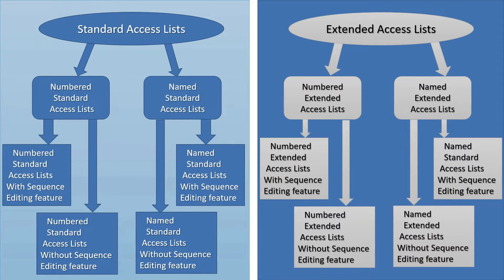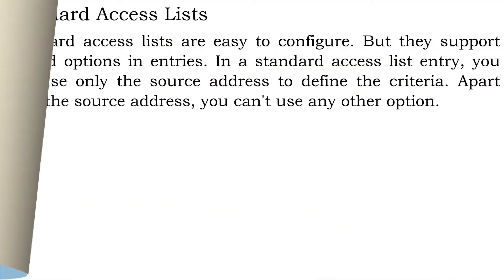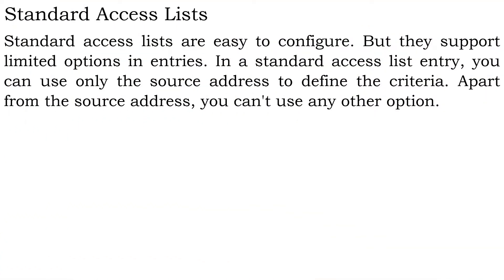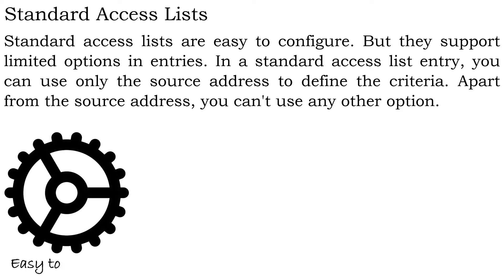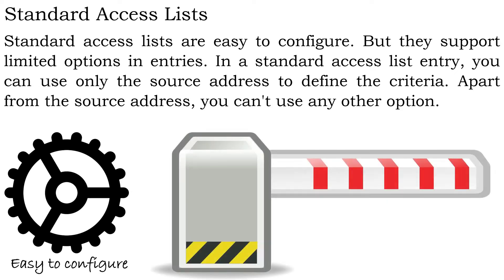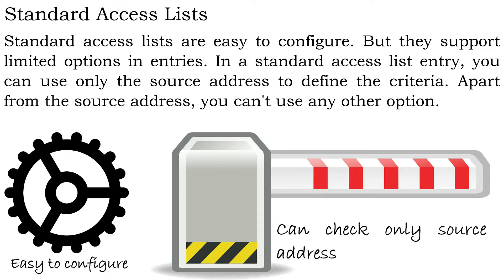Let's discuss the properties, characteristics, and functions of ACL types and understand how each type differs from the others. Standard access lists are easy to configure, but they support limited options and entries. In a standard access list entry, you can use only the source address to define the criteria — apart from the source address, you can't use any other option.